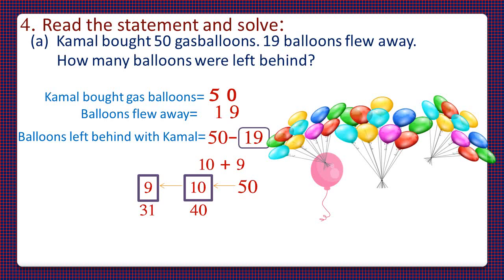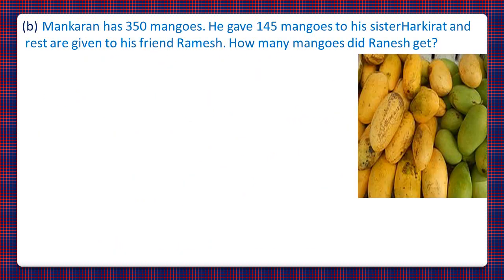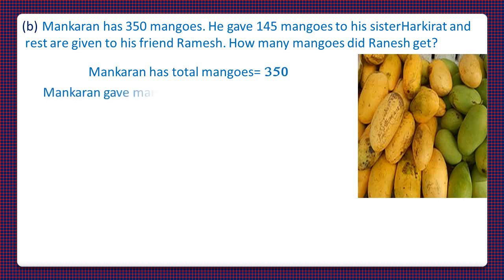So the balloons left behind with Kamal are 31. Now let's move to Part B. Mankaran has 350 mangoes. He gave 145 mangoes to his sister Harkeerat, and the rest are given to his friend Ramesh. How many mangoes did Ramesh get? Mankaran has total mangoes: 350. Mankaran gave mangoes to his sister Harkeerat: 145.